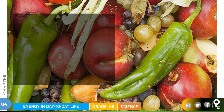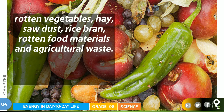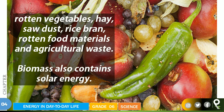Other examples of biomass include rotten vegetables, hay, rice bran, rotten food materials, and agriculture waste — all are known as biomass. This biomass also contains solar energy, because it originally comes from vegetables and plants.